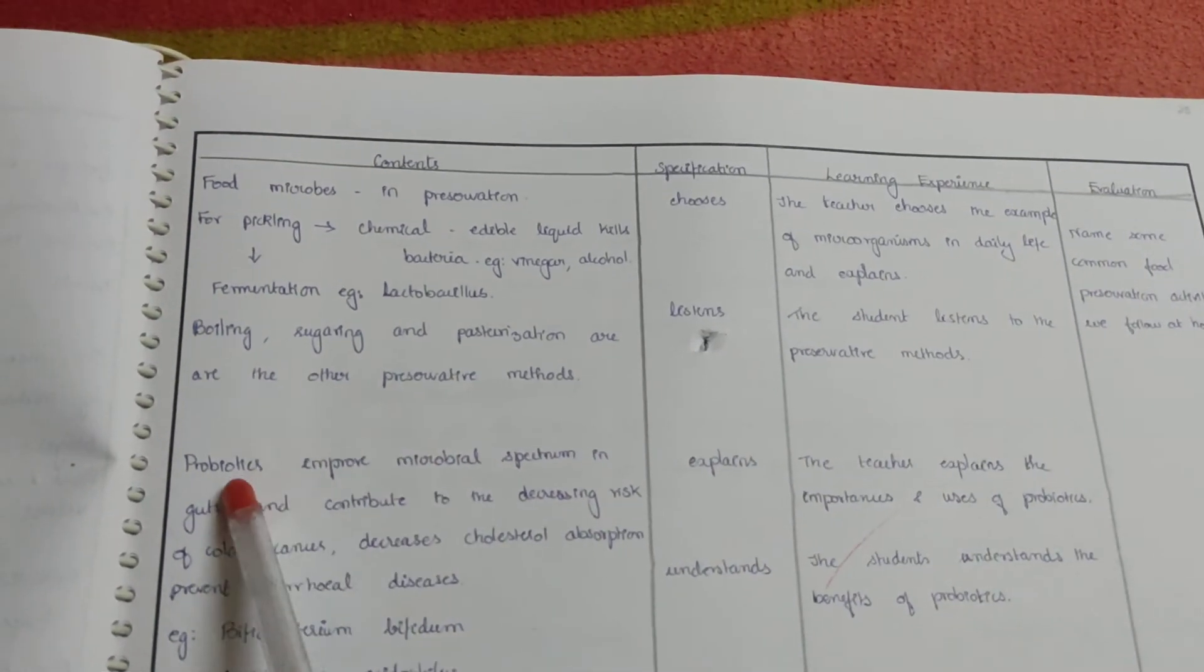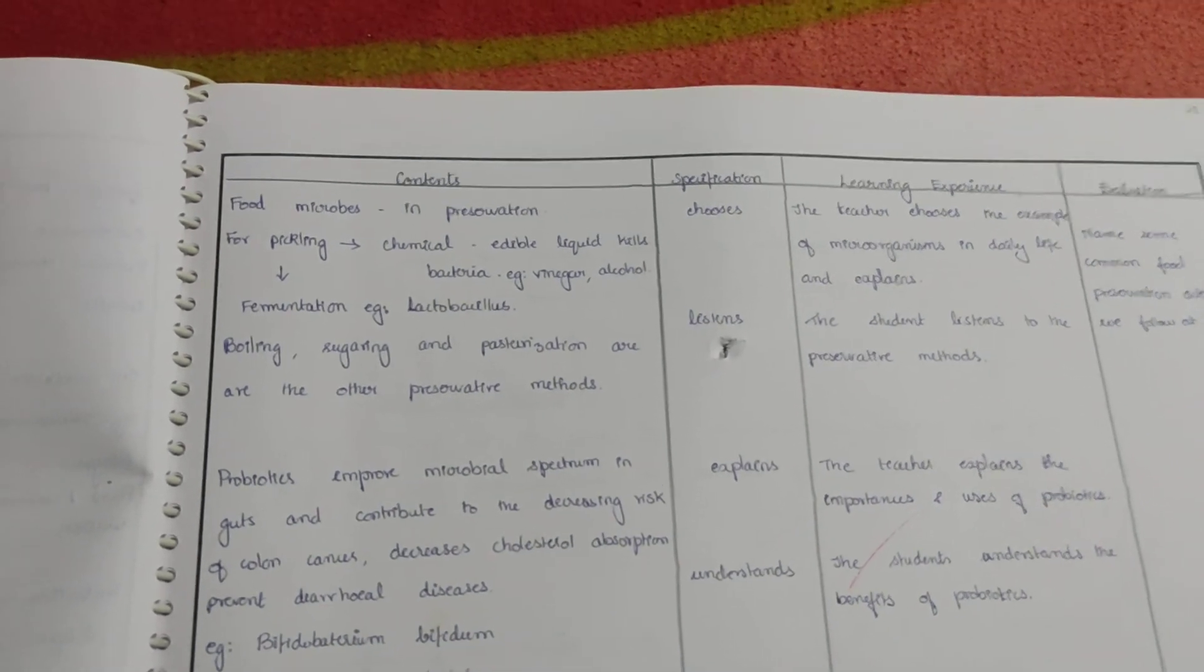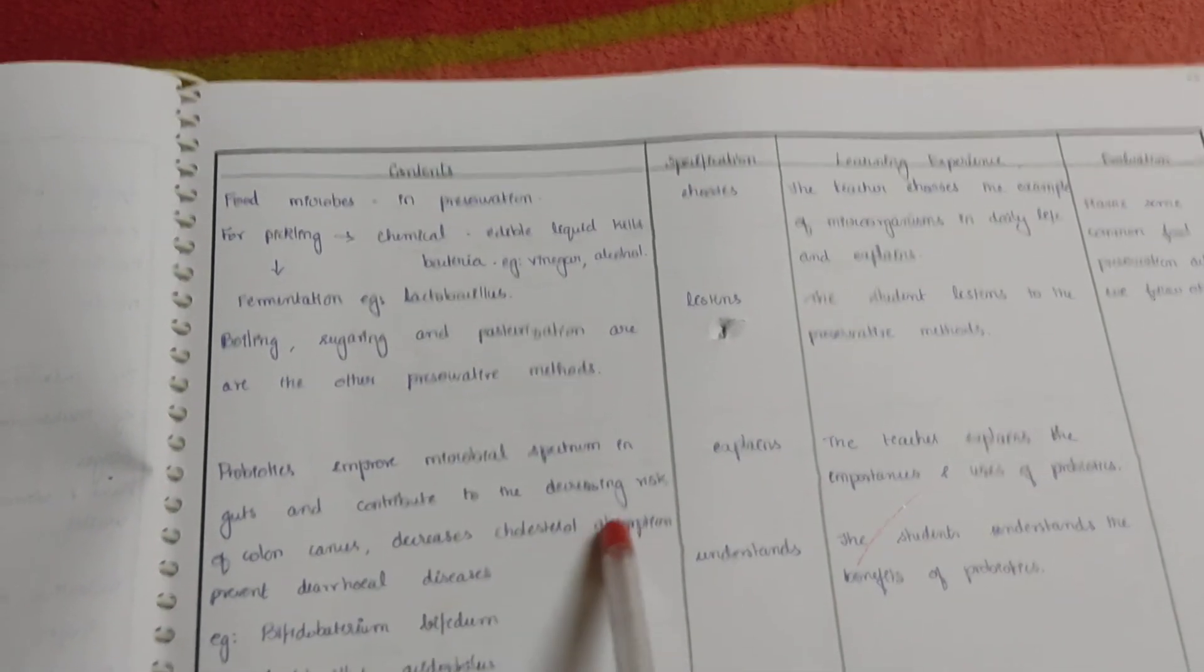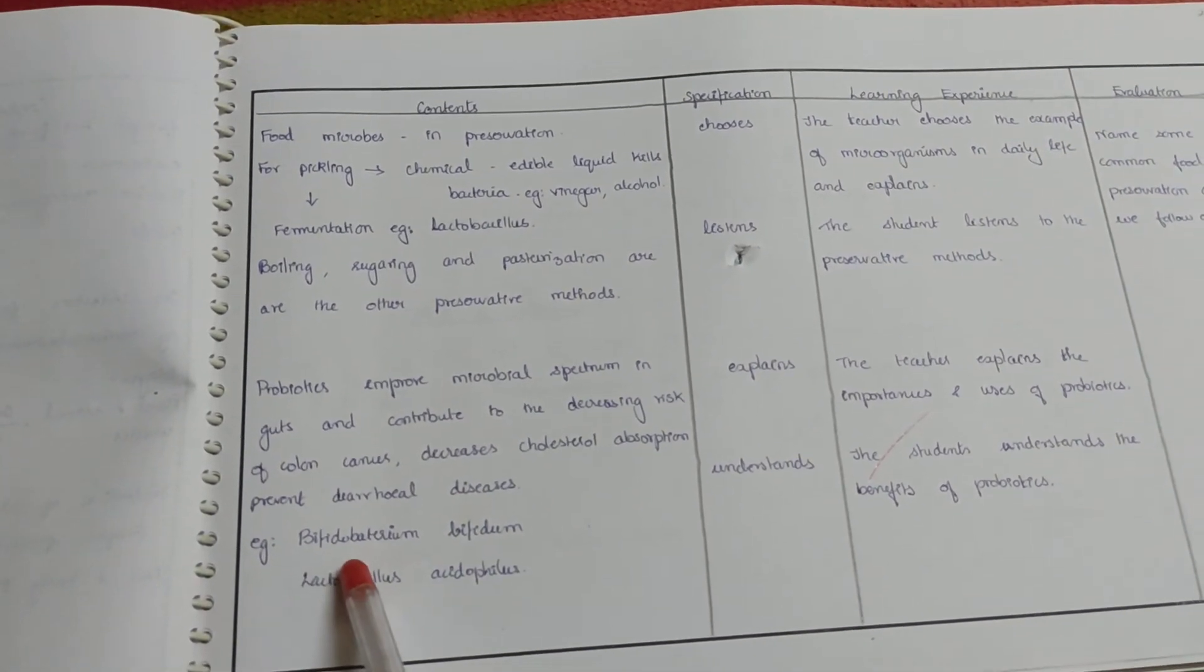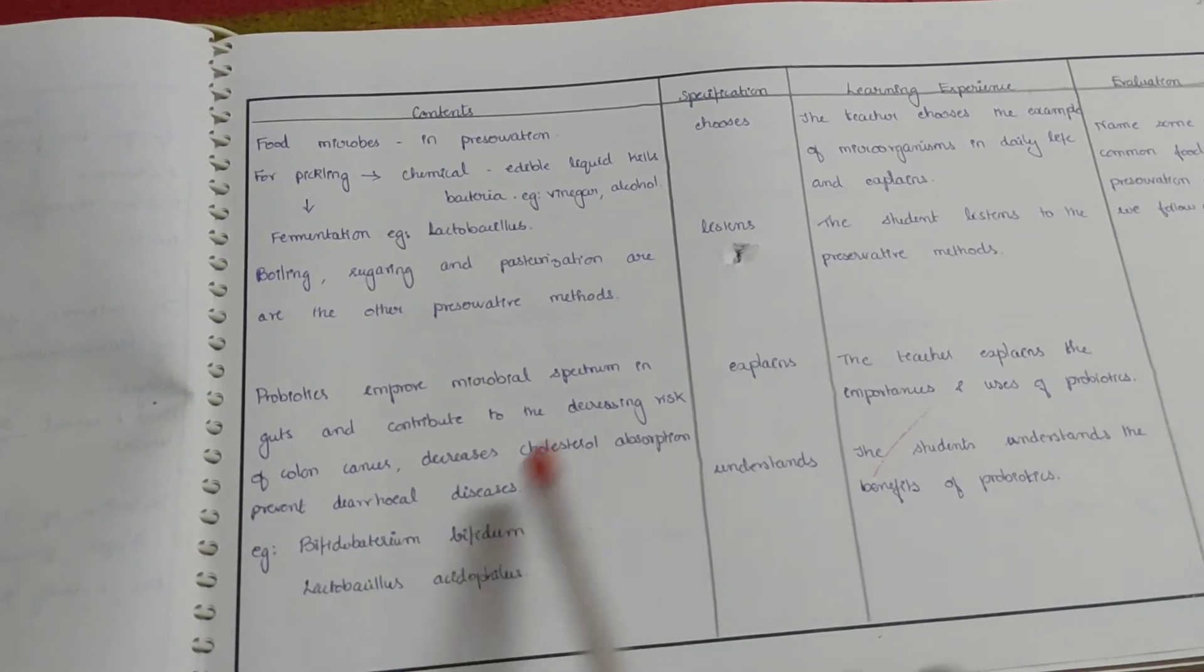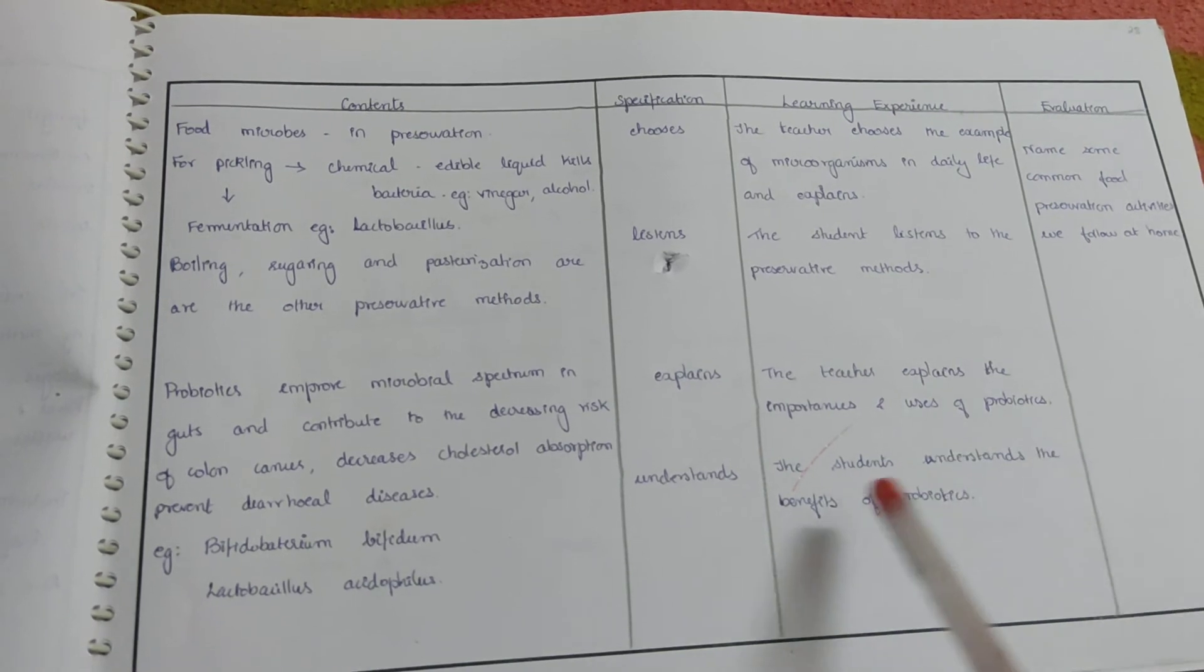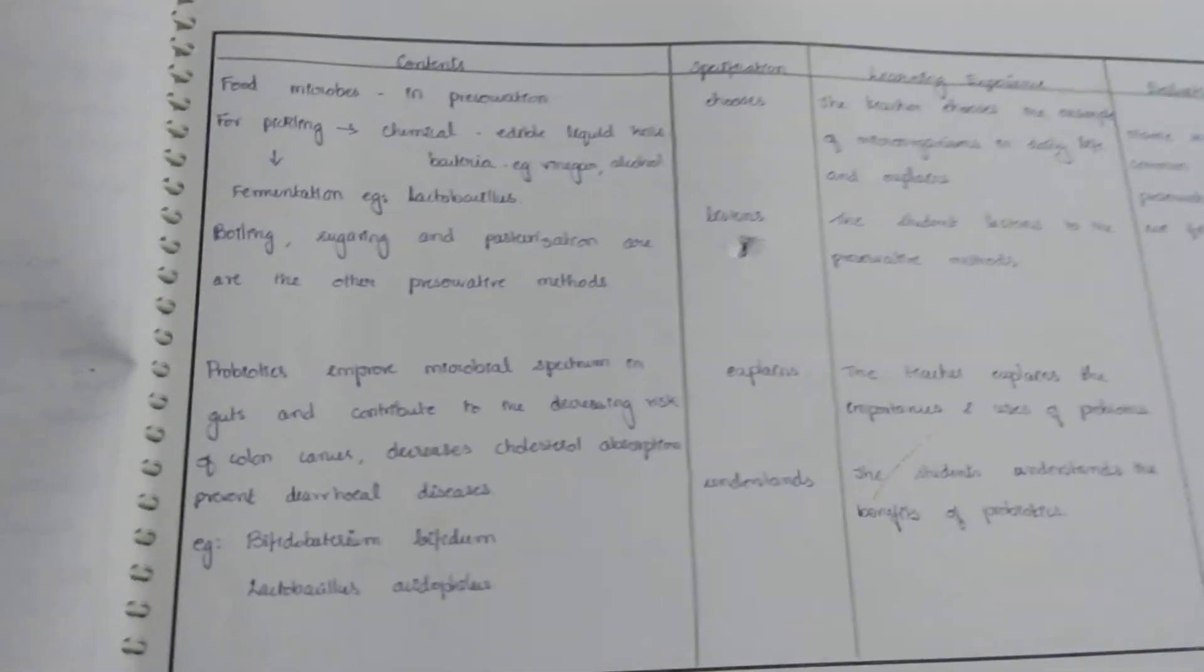Next content: probiotics improve microbial spectrum in guts and contribute to the decreasing risk of colon cancer, decreases cholesterol absorption, prevent diarrheal diseases. Example: Bifidobacterium bifidum, Lactobacillus acidophilus. The teacher explains the importance and uses of probiotics. The students understand the benefits of probiotics.